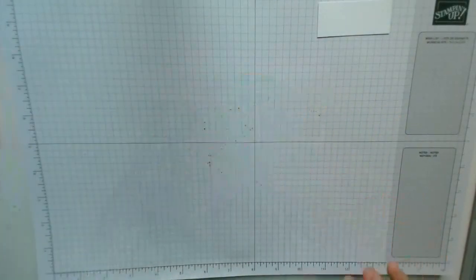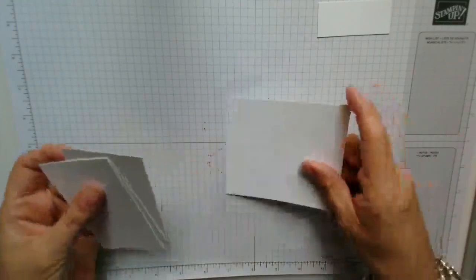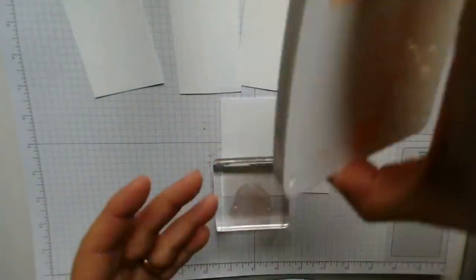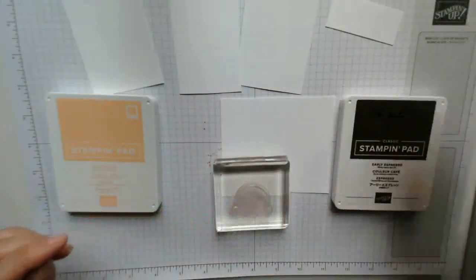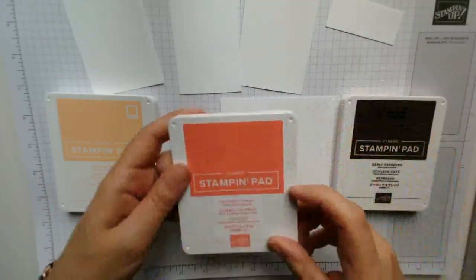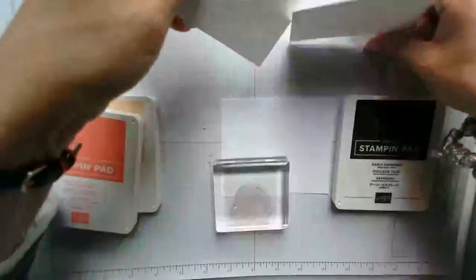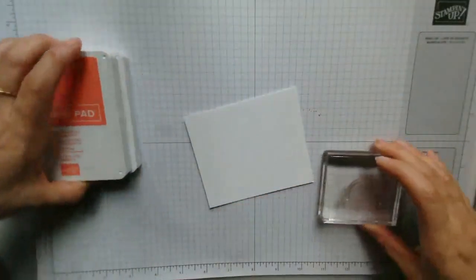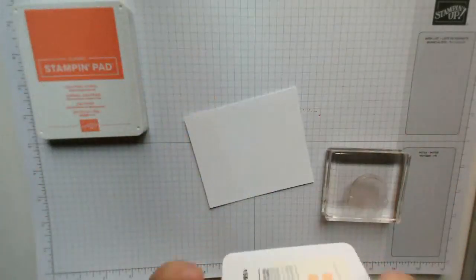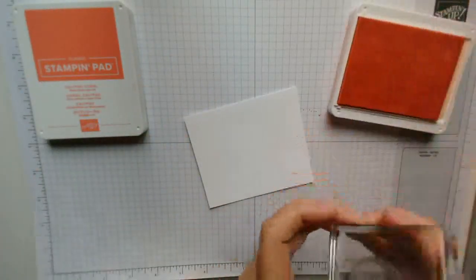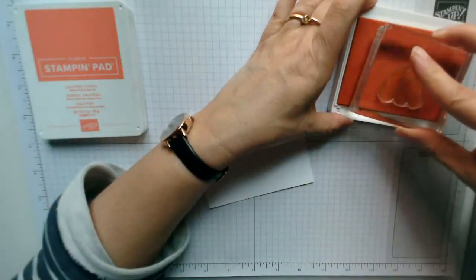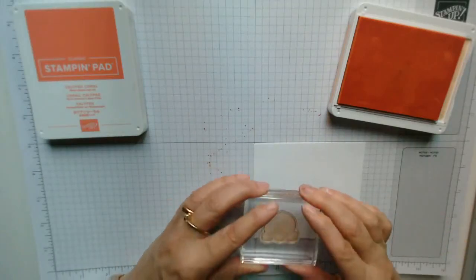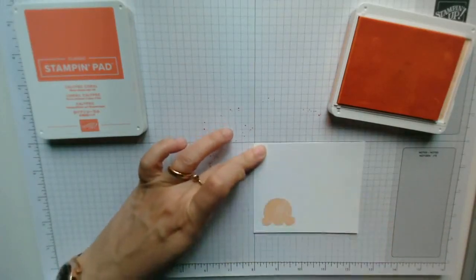Okay, now that can sit aside while we create the ice creams. So I have some scrap papers and I have my ice cream. I've got pale papaya, early espresso and the calypso coral. Put those aside for a second and I'm going to do one of each ice cream, so the first one I'm going to do is the pale papaya. Tap that onto the ink pad and then straight down onto the cardstock.